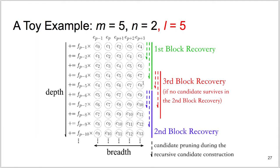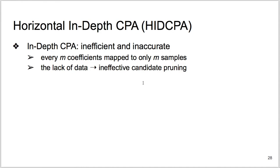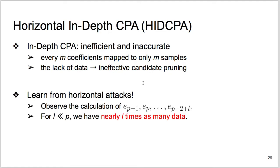What if we observe more than one output coefficient calculation? In in-depth CPA, candidate pruning can be ineffective because each m coefficient block corresponds to only m power samples. Many wrong hypotheses, their prefixes, can still fit the few power samples quite well. So overall, the in-depth CPA can be inefficient and even inaccurate. But we can learn from horizontal attacks and observe some near the middle output coefficient calculations. These output coefficients have almost as many intermediate states as the middle output coefficient.